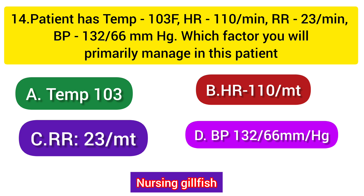Next question: A patient has temperature 103°F, heart rate 110, respiratory rate 23 per minute, and BP 132/66. Which factor will you primarily manage? Option A - Temperature 103°F is the correct answer. If the temperature is reduced, the heart rate will automatically reduce. For every one degree rise in temperature, the pulse increases by 10 beats per minute, so you must reduce the temperature first.